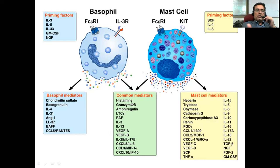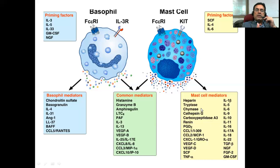You can guess about the functions of the mast cells when you look at the mediators. For instance, histamine is involved in so many different things like vasodilation. Tryptases, chymases, cathepsins — different types of enzymes — are involved in different functions. Some of these enzymes are activators of metalloproteases, which are involved in disintegration of the extracellular matrix and enhance the inflammatory response in your bodies. Different cytokines are also secreted — some are pro-inflammatory cytokines.